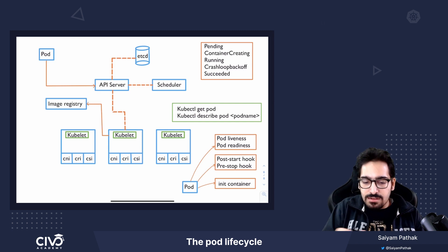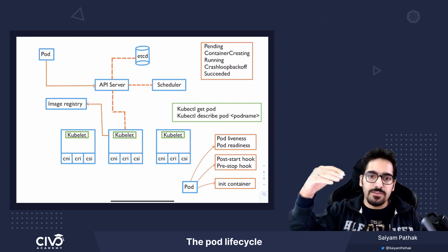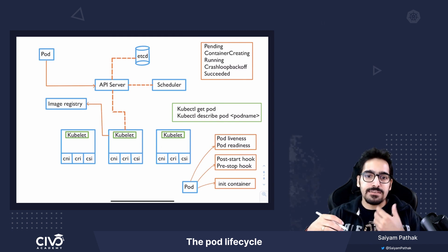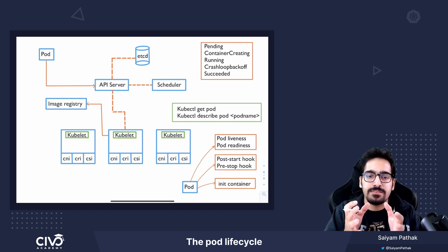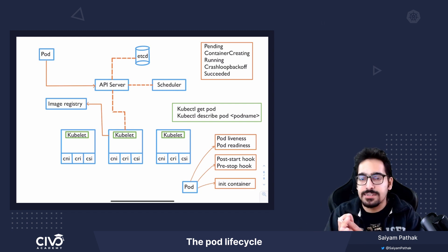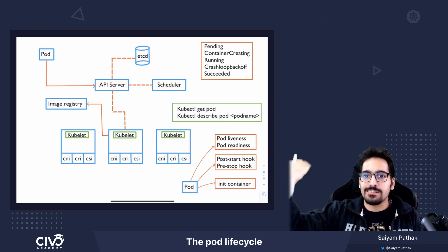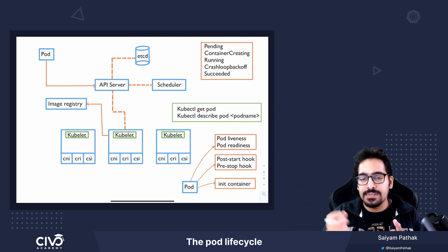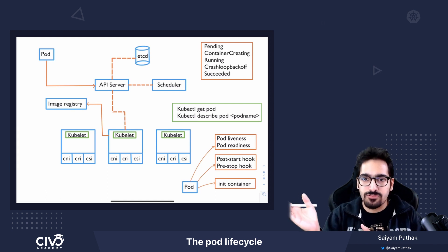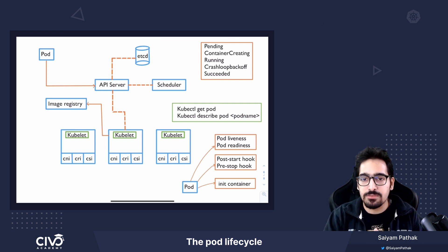So all in all, this is the complete lifecycle of a pod. It goes to the API server, the scheduler finds a node, then the kubelet is responsible for running it and attaching the IP address. Only the API server interacts with etcd. The states go from pending to container creating to running, and if any process restarts multiple times it goes to crash loop back off, then succeeded once the pod's task is completed.